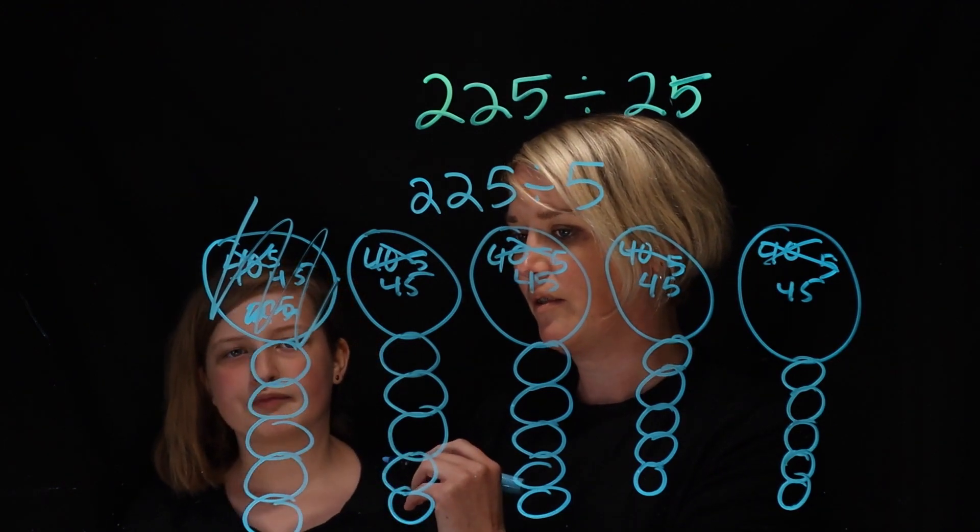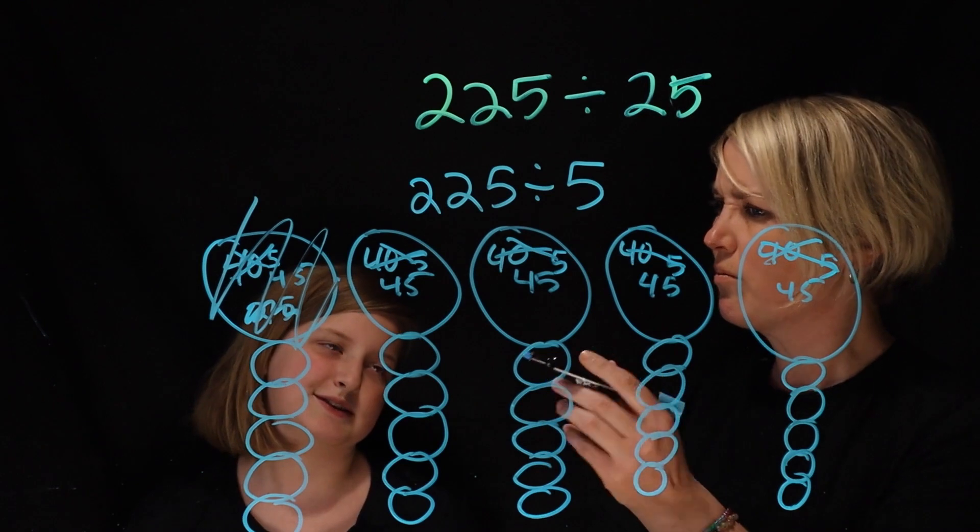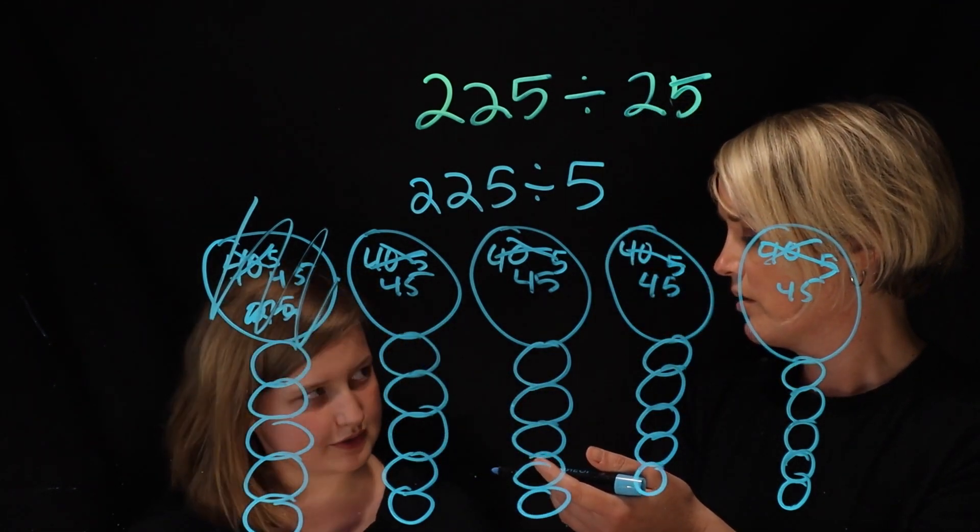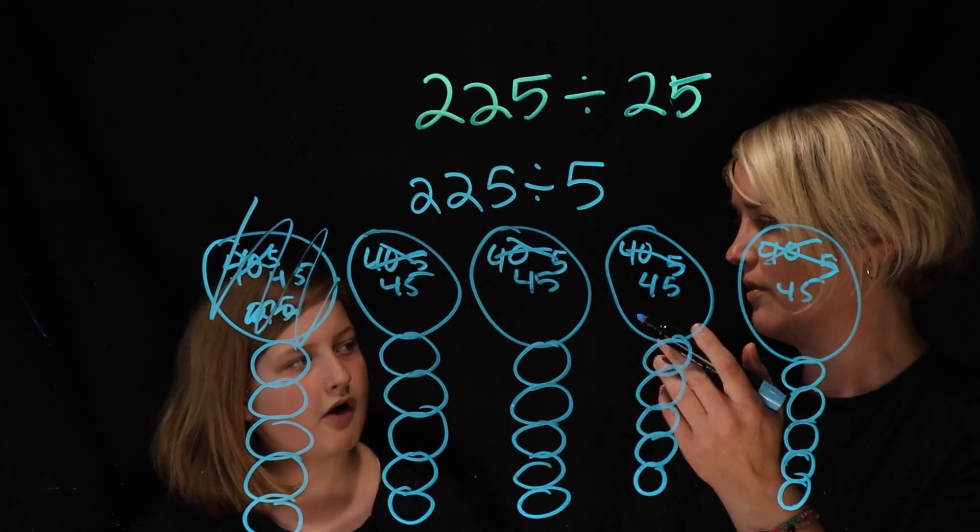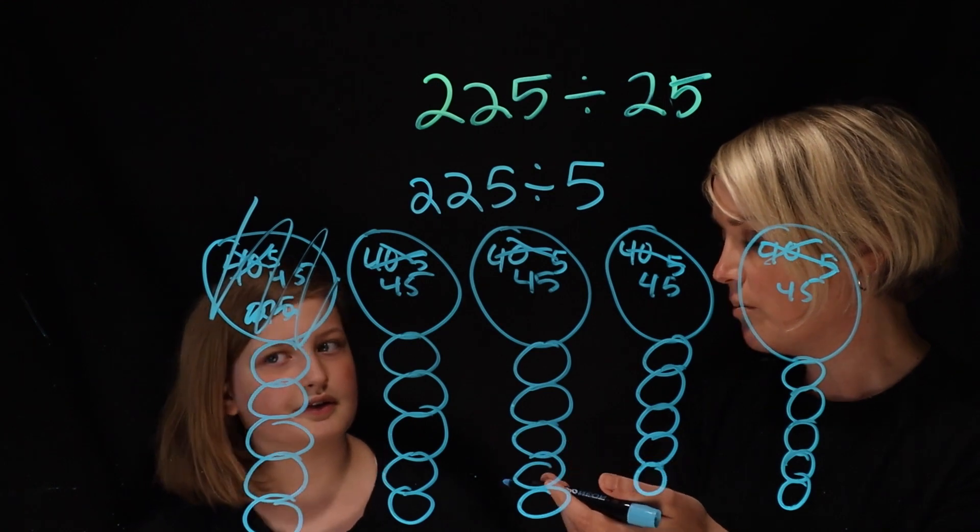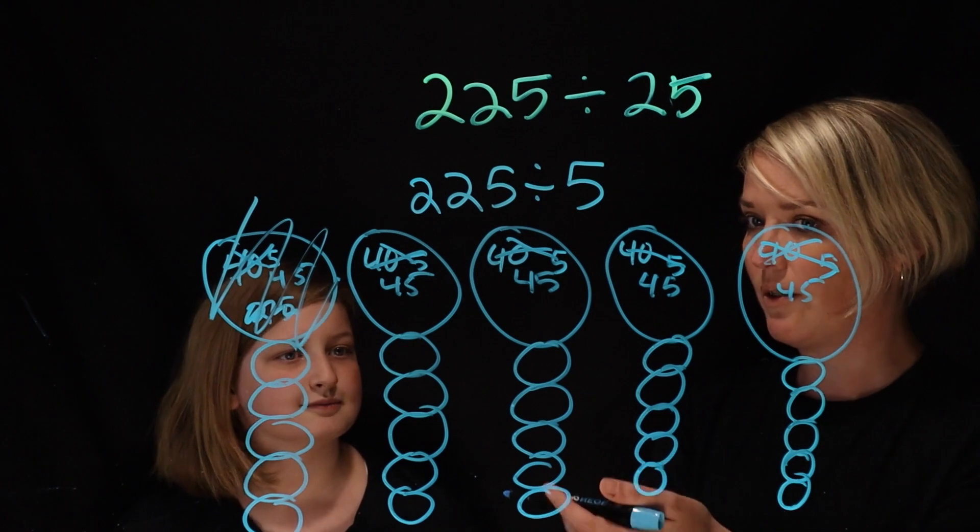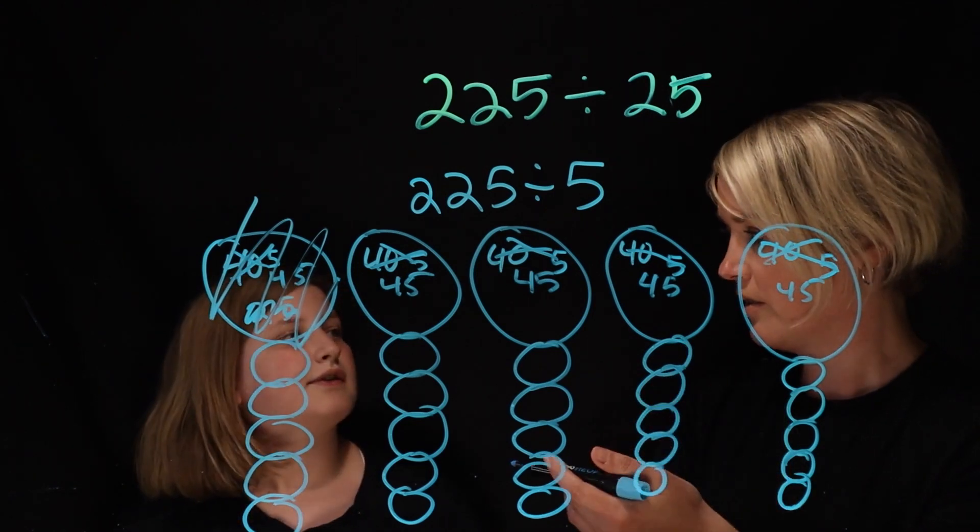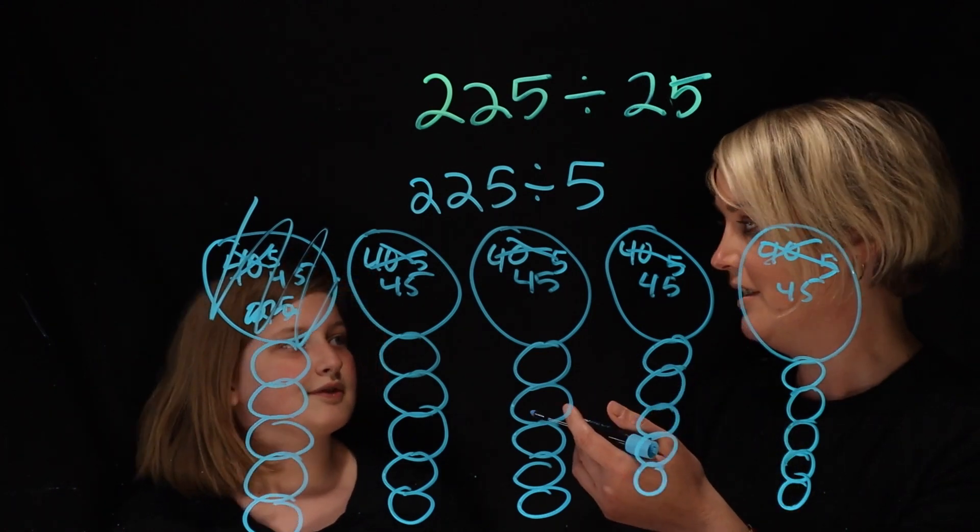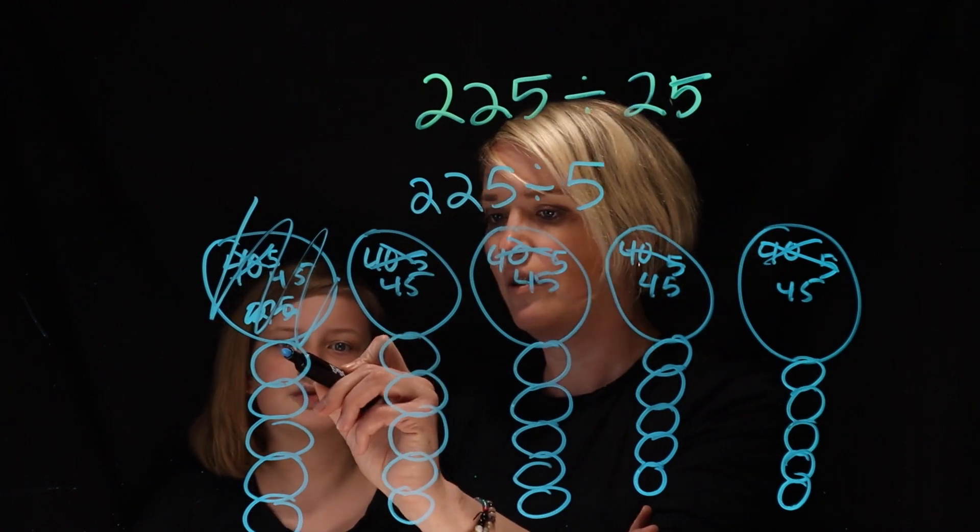Okay, so how much should I put in each of these 5 groups then? So I want to just start with 5. 5 times what would give you 45 though? 5 times 5 is 25. Yep. And then 5 times 6 would be 30. Okay, 5 times 7? 35. So 5 times 8? 40. 5 times 9? 45. Okay, so how much should I put in each of these? Nine.